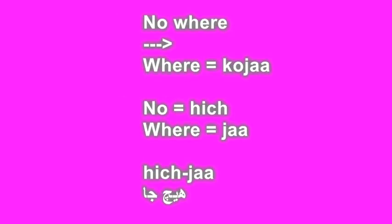What about 'nowhere'? Do you remember the word for 'where'? Correct — it is 'koja.' Now for 'nowhere,' we have 'hitch ja.' Again, 'hitch' is a negation and 'ja' refers to place. Nowhere — 'hitch ja.'